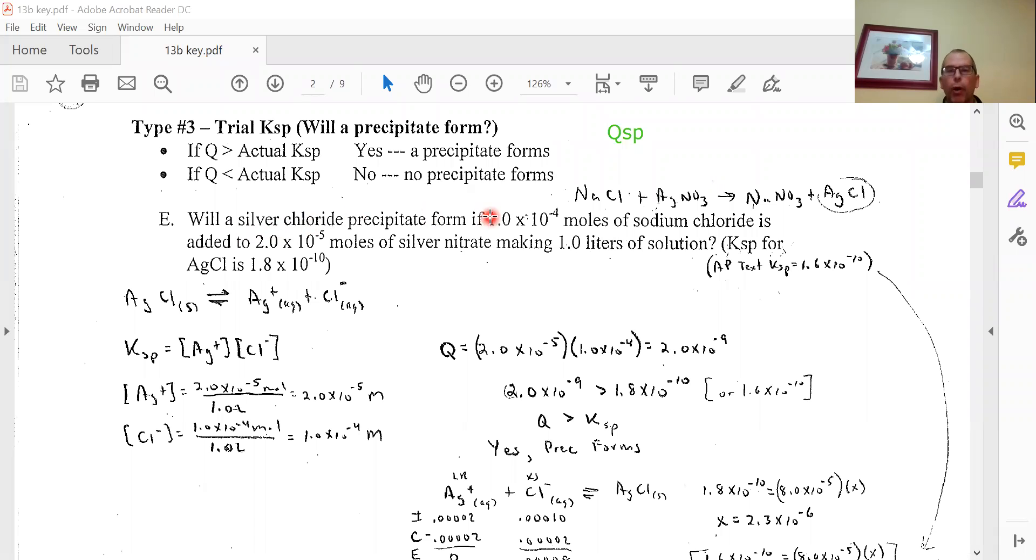Will silver chloride precipitate form if 1×10^-4 moles of sodium chloride is added to 2×10^-5 moles of silver nitrate? My first thought is silver chloride is very insoluble, of course it's going to form a precipitate. But look at how small these amounts are - maybe these small amounts could stay dissolved. We'll do a Qsp problem where we find a Q value compared to K and figure out which way is favored in equilibrium.